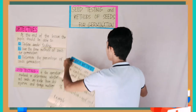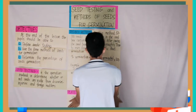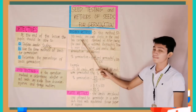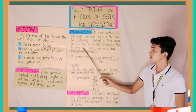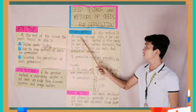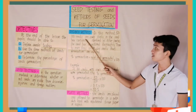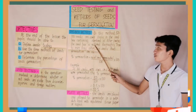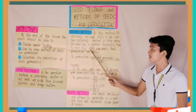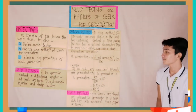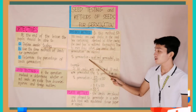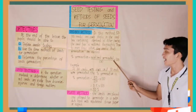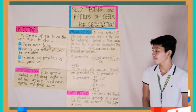Seed box method: in this method, 50 to 100 seeds are sown thinly in a seed box containing sterilized soil. After sowing, the seed box is watered thoroughly. Three to seven days after, the seeds that germinated are counted. The percentage germination is equal to the number of seeds germinated divided by 100, times 100.